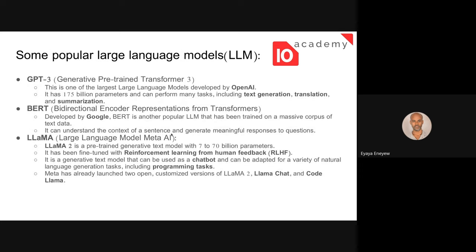Next, let's look at some popular LLMs — there are a lot of them. The first is GPT, specifically GPT-3. This is one of the largest language models developed by OpenAI. It has 175 billion parameters and can perform many tasks including text generation, translation, and summarization.